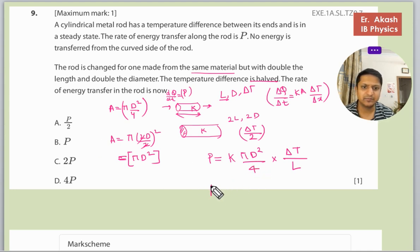Now we can calculate P2, the rate of change of heat for the larger body. P2 will be equals to K, and this area will be pi D squared. Delta T has been halved, so delta T by 2 times 1 by length has been doubled, so 2L.